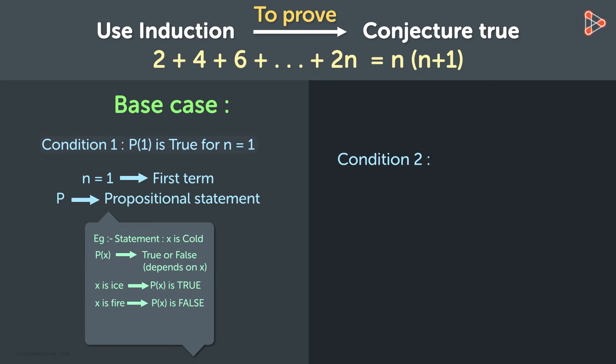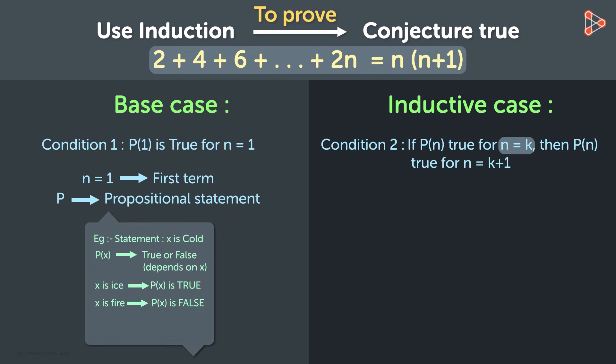The second is a conditional property, also called as the inductive step. If we assume that the formula is true for n equals k, then it will also be true for n equals k plus 1. Thus creating the domino effect which we had spoken about earlier. It could also be thought of as P of k implies the truth of P of k plus 1. This assumption that we make, the assumption that the formula is true for n equals k is called the inductive hypothesis.